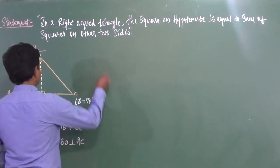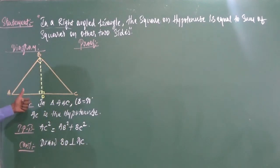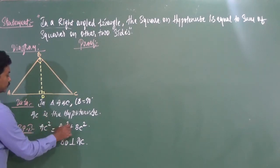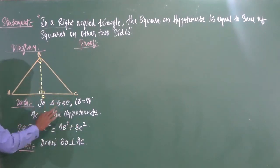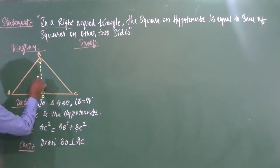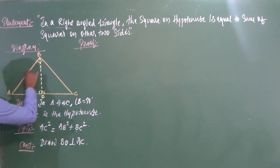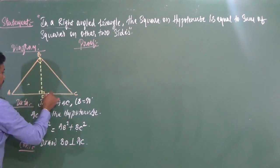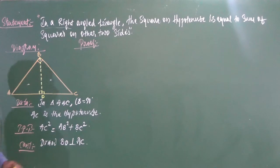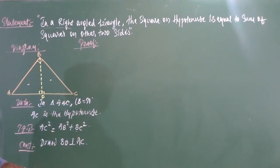Now there are three right-angled triangles: triangle ABC which is the original triangle, triangle ABD which is the left right-angled triangle, and triangle BDC which is the right right-angled triangle — all three formed by the construction. We will get into the proof by selecting two pairs of triangles: first, triangle ABC and triangle ADB; then, triangle ABC and triangle BDC.